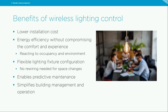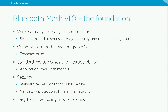Another key advantage is flexibility. Unlike traditional wired setups, there is no need to reroute wires when a space is rearranged. Lighting controls also enable predictive maintenance and simplify building management by providing access to performance data. Bluetooth Mesh 1.0 enabled wider adoption of wireless lighting control — it was a major milestone and remains the foundation for all systems including Bluetooth NLC. It introduced short-range wireless many-to-many communication using Bluetooth Low Energy transport, enabling scalable, robust, responsive, easy-to-deploy, and runtime-configurable networks.